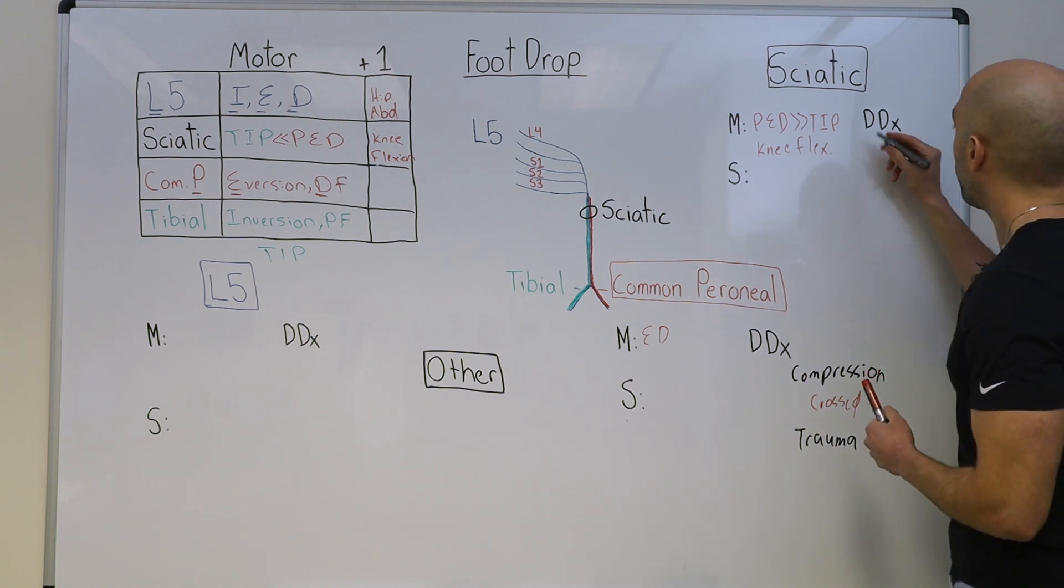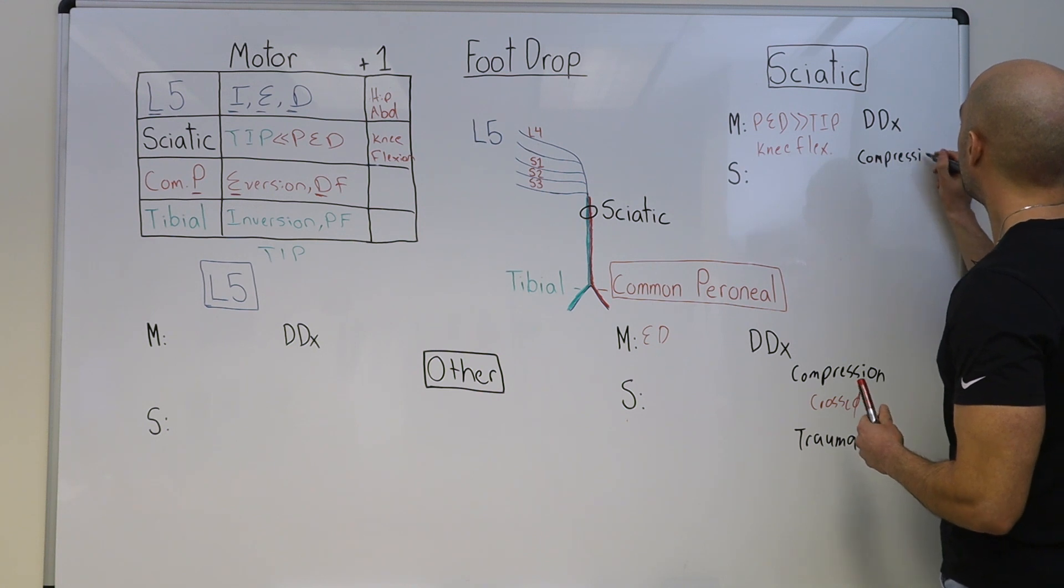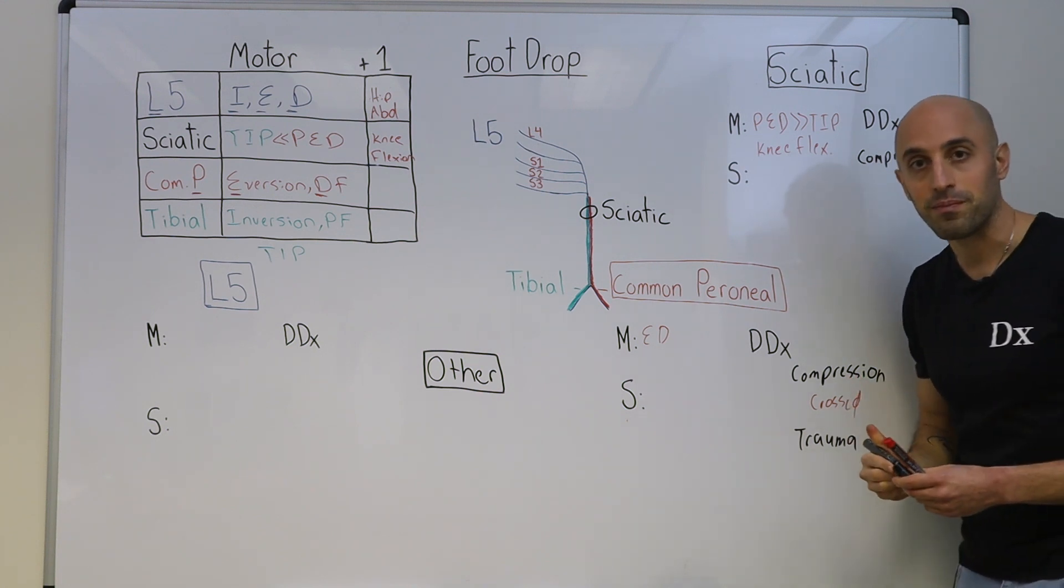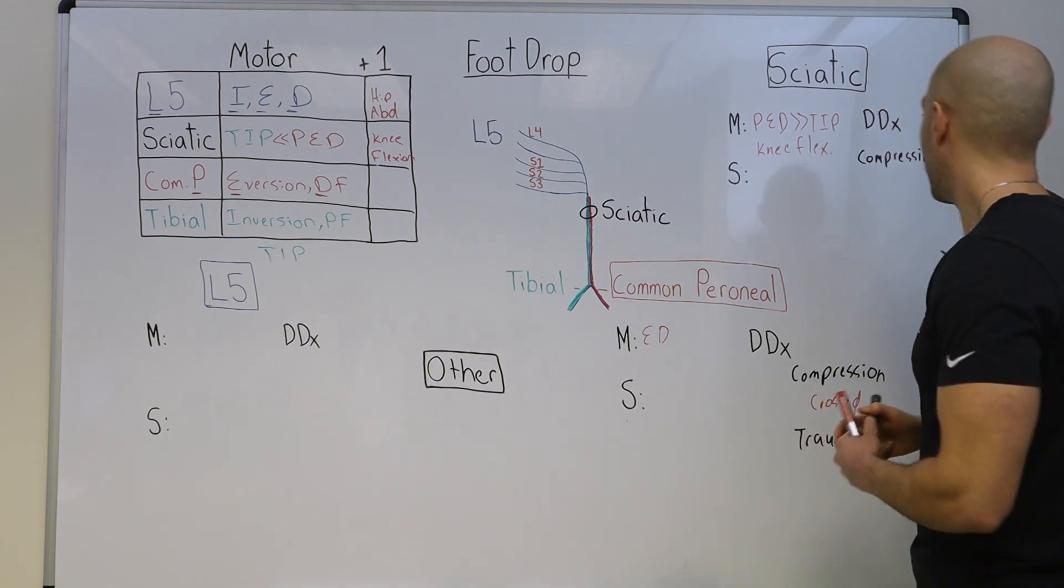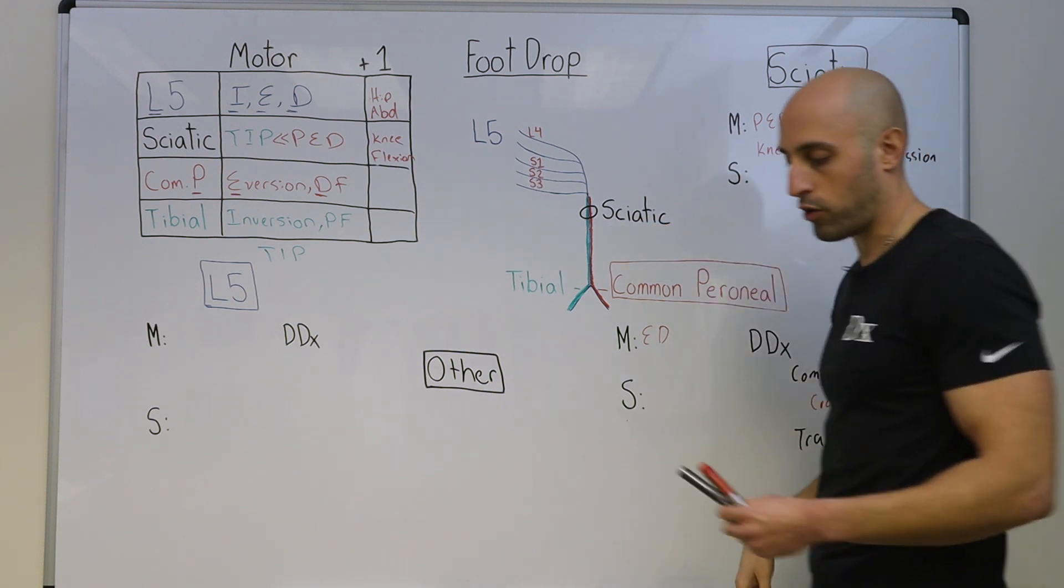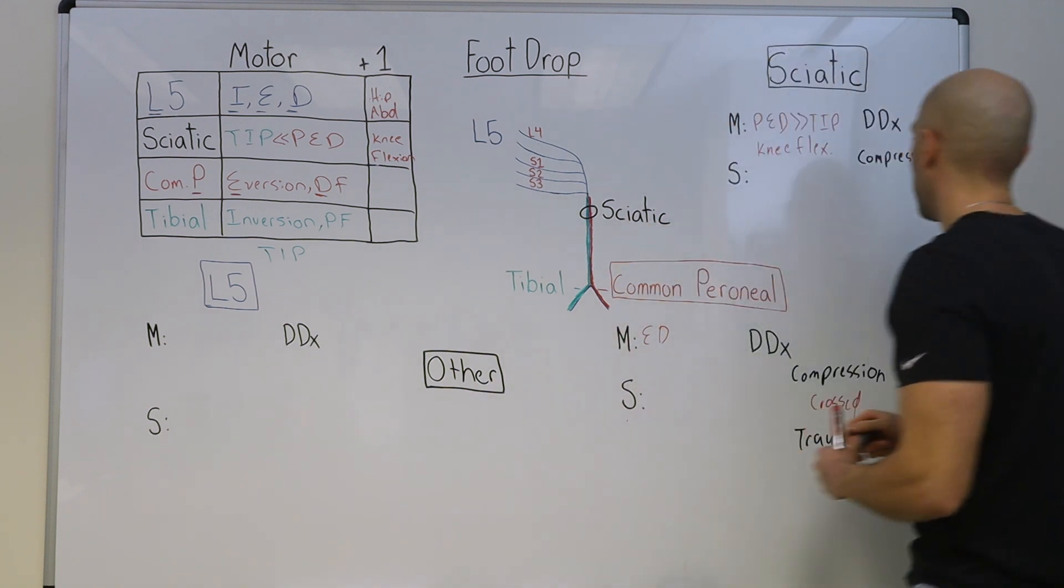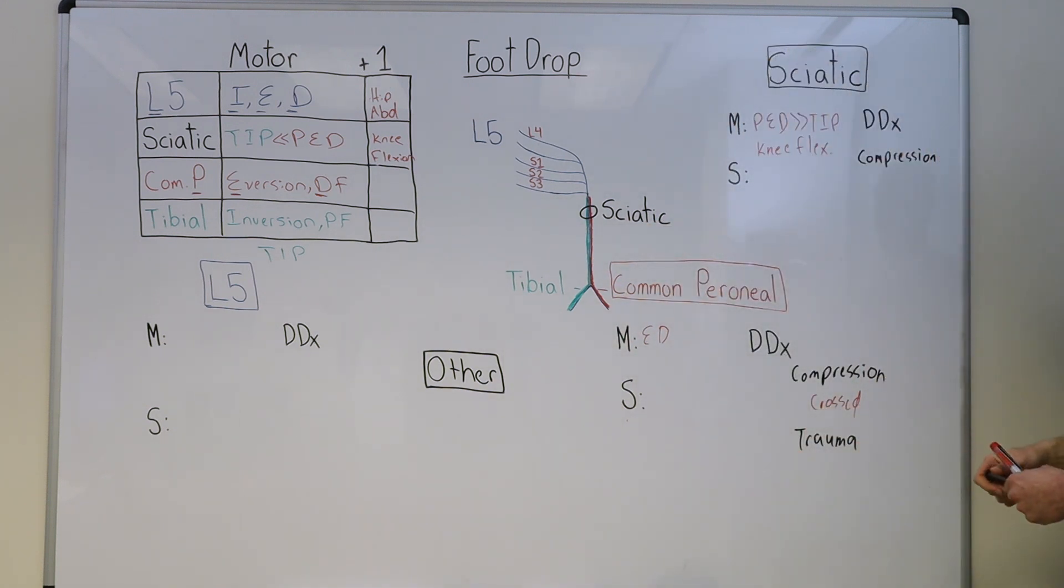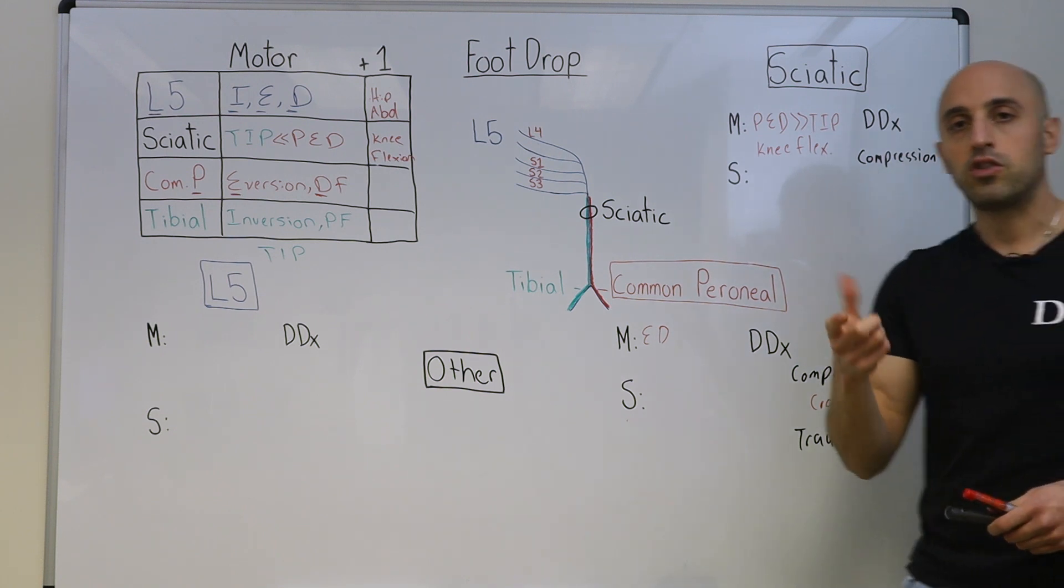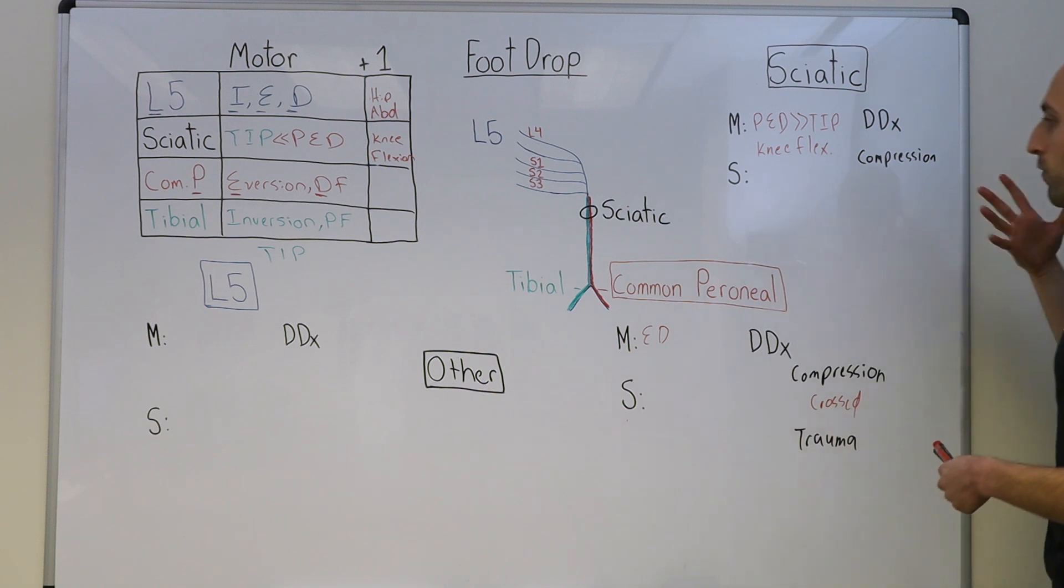Well, it can be from compression. This is why when you sit on the toilet for too long, your leg starts to fall asleep and you may have a foot drop. That's due to a sciatic neuropathy. Because think about it, when you're sitting on a toilet, you're putting pressure right on the sciatic nerve. Another common reason for sciatic neuropathy in the hospital is due to intragluteal injection. So that's a form of trauma.